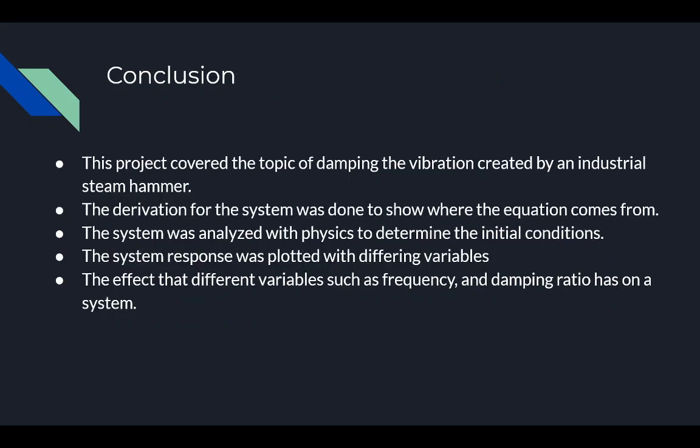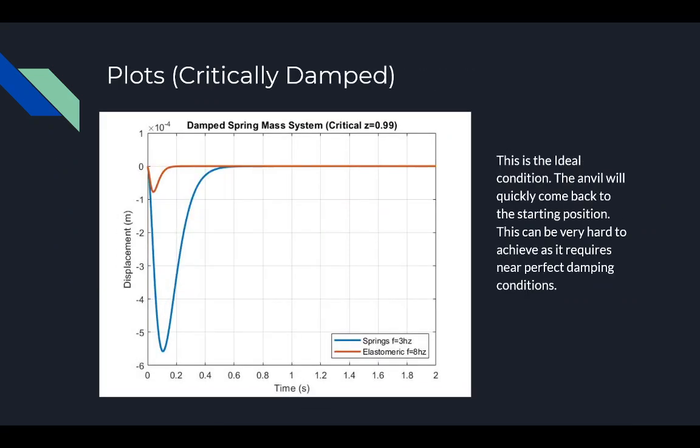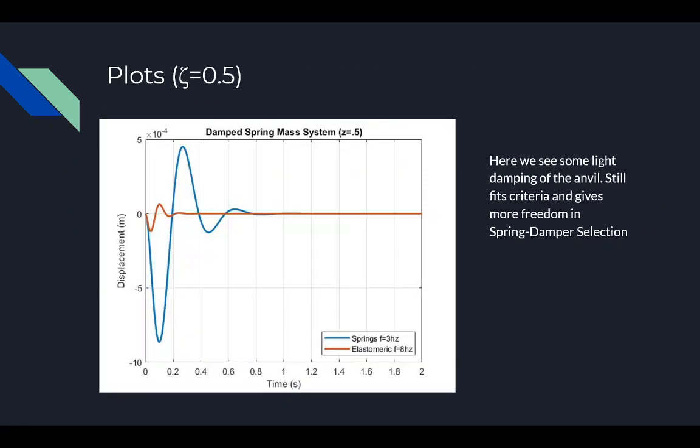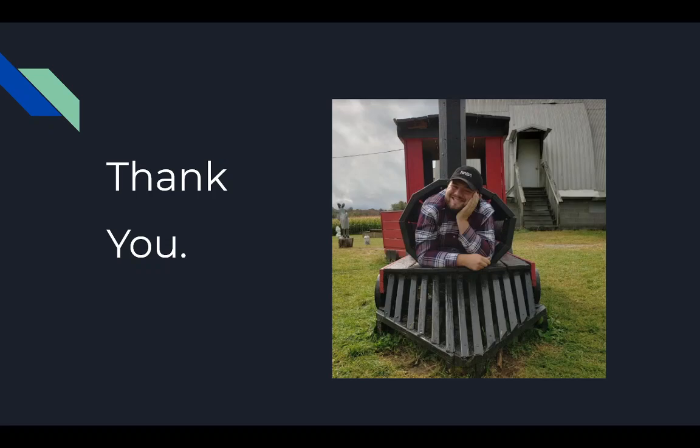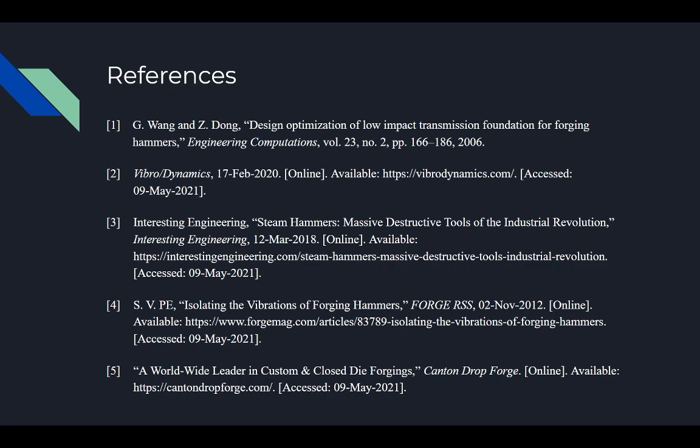So in conclusion, today we talked about the damping of the vibration caused by industrial steam hammer. The derivation for damping was shown and we analyzed the system with physics to determine our initial conditions. The system response was applied in MATLAB with different variables and the effect that different variables like frequency and the damping ratio has on the system. Remember, 0.99 is critical damping, 0.5 is underdamped, and 0.1 is very underdamped. Thank you all for tuning in. I hope this was informational. Here are some references down here. Thank you.